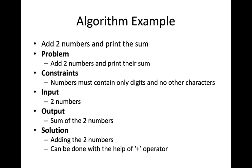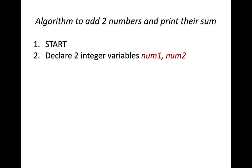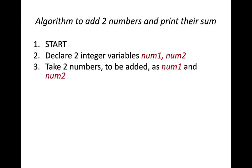Now we write the algorithm to add two numbers. Step 1: Start. Step 2: Declare two integer variables num1 and num2. Always use meaningful variable names — use 'num1' and 'num2' rather than 'a' and 'b' so any other person can understand. Step 3: Read the two numbers into num1 and num2 — that is the input.